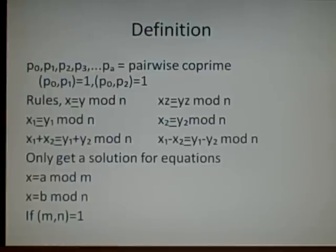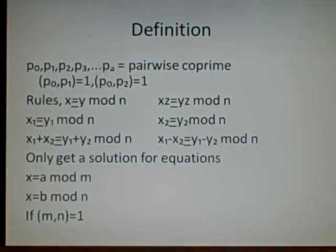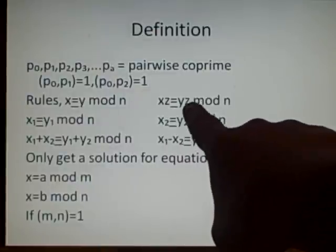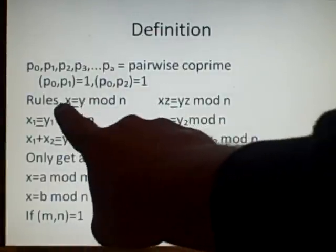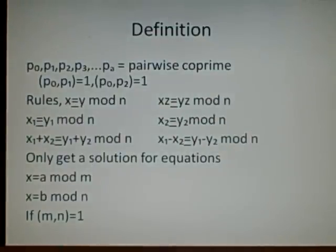Now we've got some rules which are for the Chinese remainder theorem. Well, first we're going to assume that x is congruent to y mod n. Now, you should know what this means. And what we're saying here is that if you multiply it by anything, such as z, if you multiply it on both sides, so x times z and y times z, then it's exactly the same.